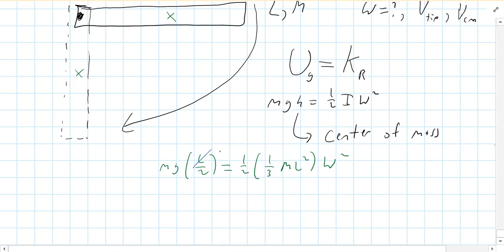Good news is some stuff cancels. So, like one of the L's goes away. The mass of the bar drops out. It doesn't matter if it's wood or lead or whatever. However, you even get a half to cancel out here and here. And so, we get G equals L over 3 omega squared. And omega equals the square root of 3G over L.